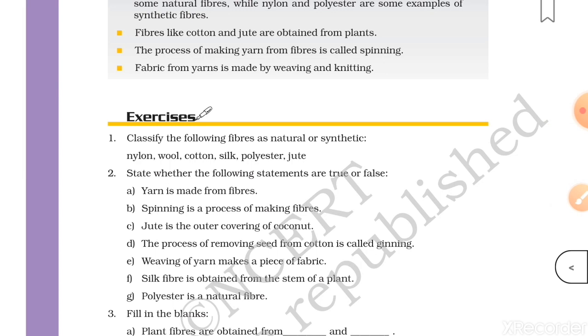You must remember that natural fibers are those which are obtained from plants and animals, and which are man made, they are synthetic. So out of nylon, wool, cotton, silk, polyester and jute.